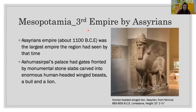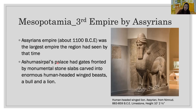The third ancient empire in Mesopotamia was Assyria. The Assyrians had been gathering power and territories since before 1100 BCE, and their military strength increased significantly under Ashurnasirpal II. By that time it was the largest empire the region had seen. The Assyrian palace had gates fronted by monumental stone slabs carved into enormous human-headed, winged beasts — a bull and a lion.